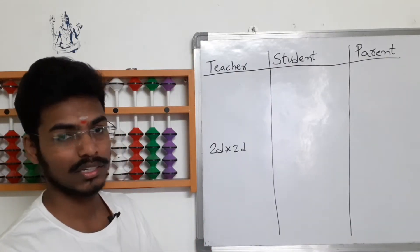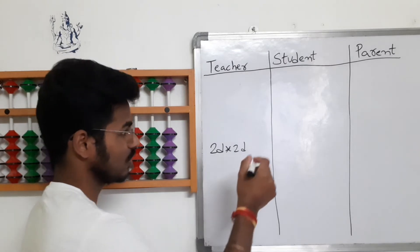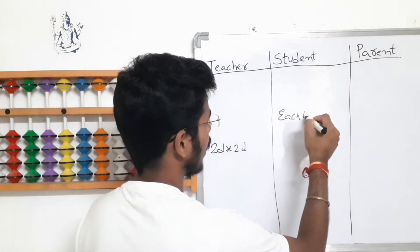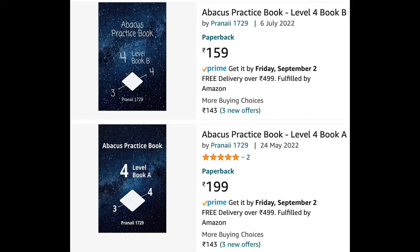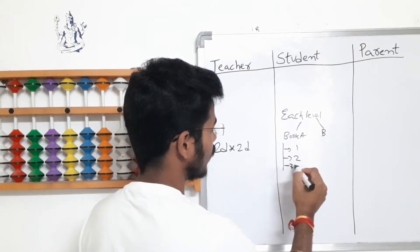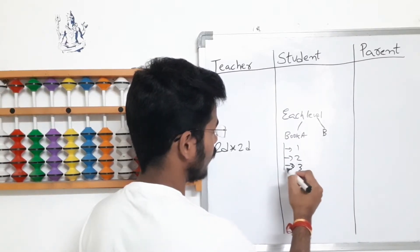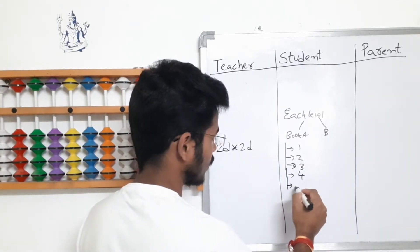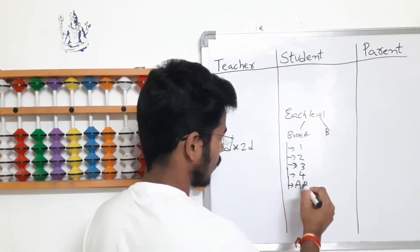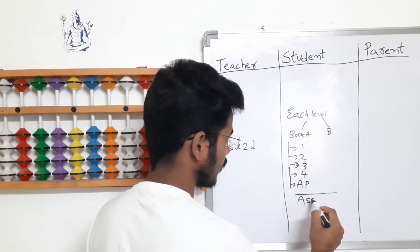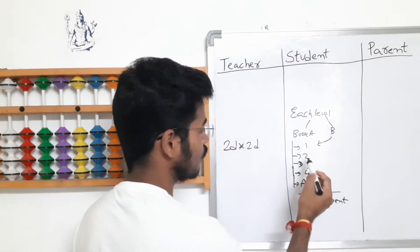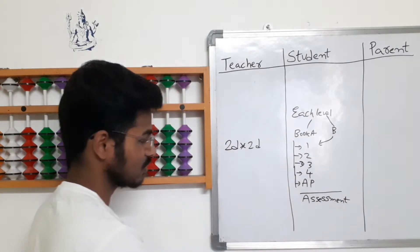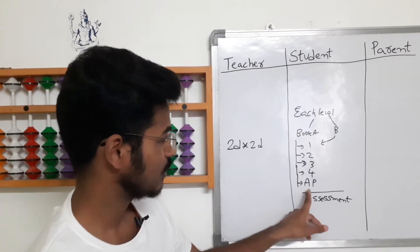Coming to the first part — how the assignments are designed. Let's discuss the book structure. In each level we will be having two books: Book A and Book B. Book A will have week one, week two, week three, and week four, followed by an assessment practice and then the assessment. The same structure applies to Book B — week one through week four, assessment practice, and then the assessment.